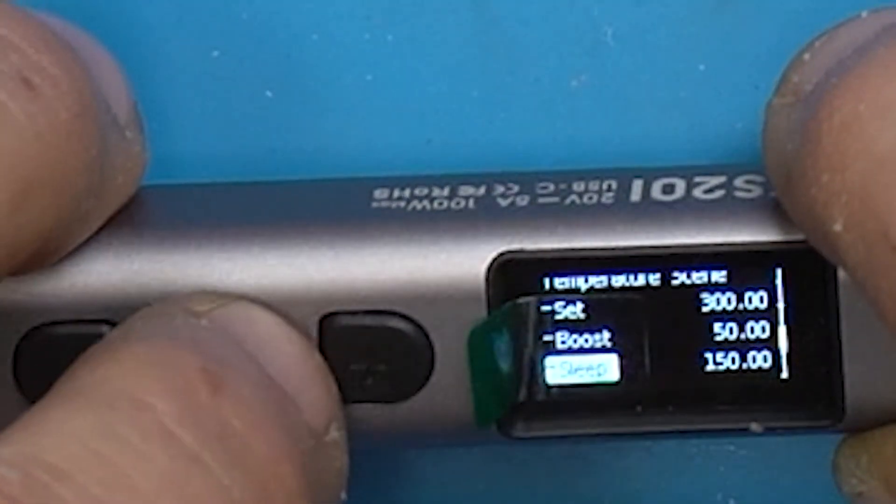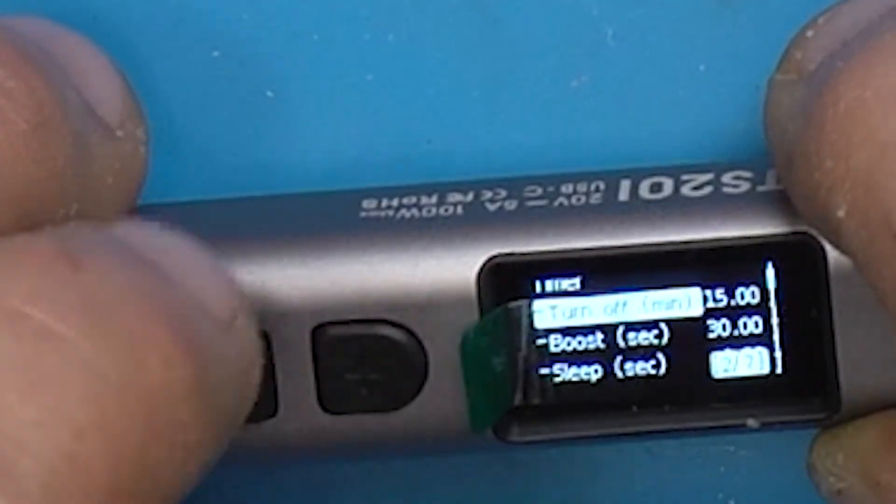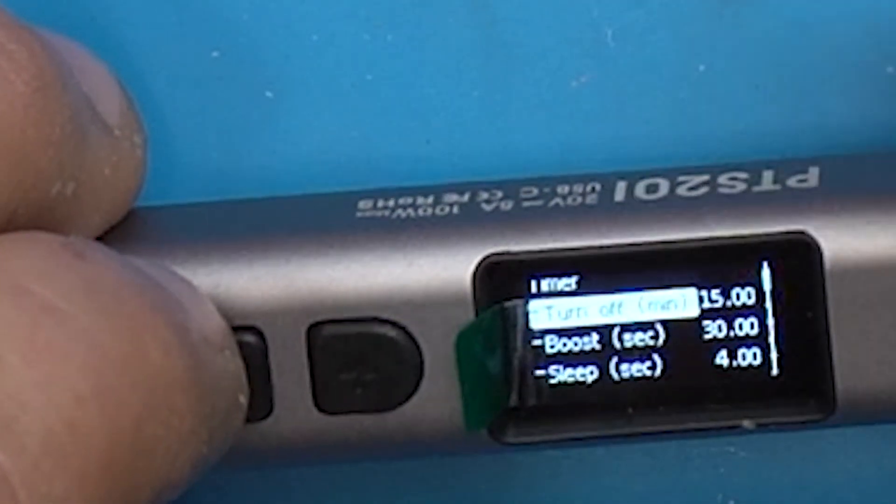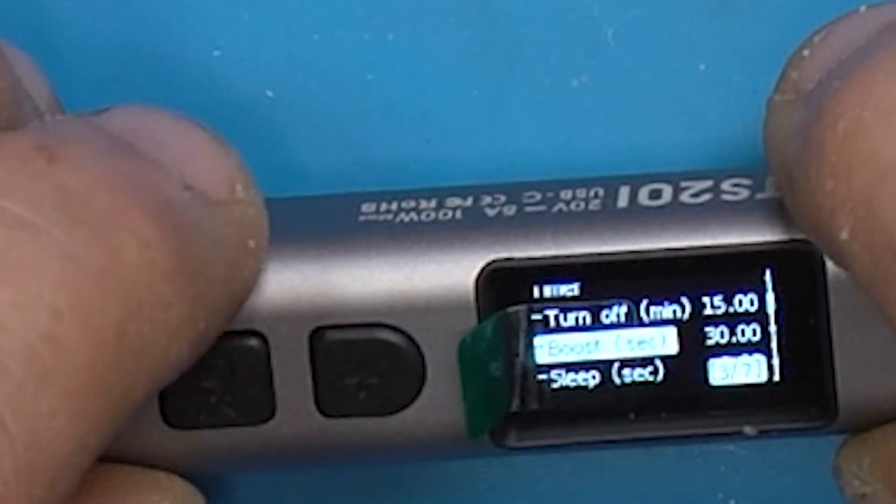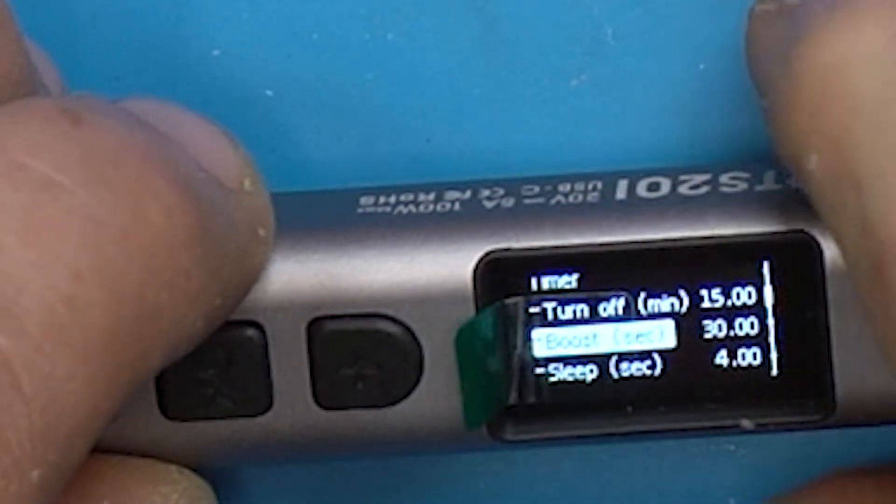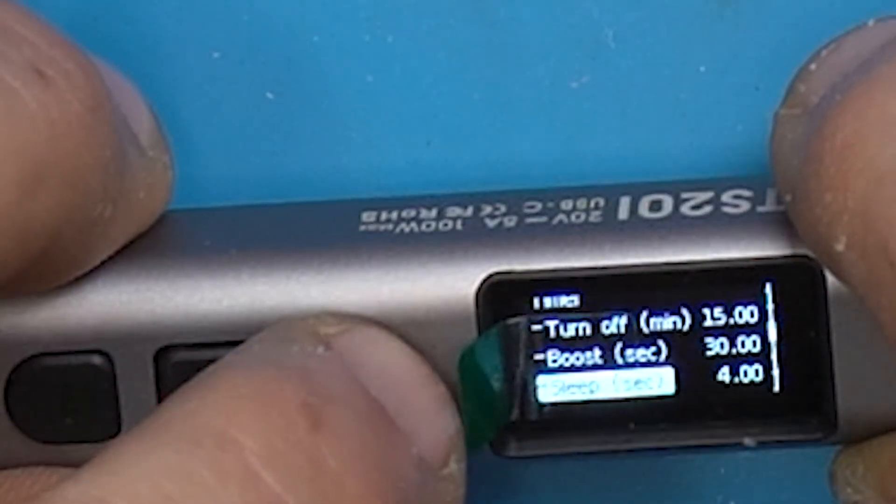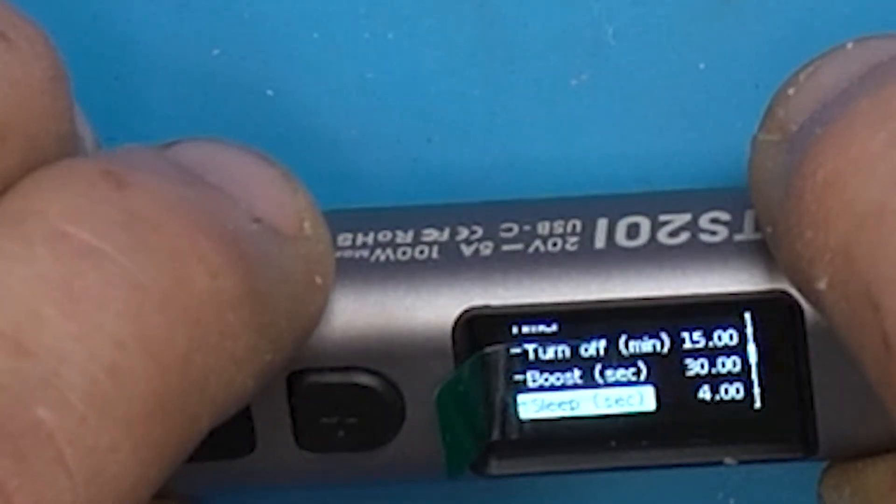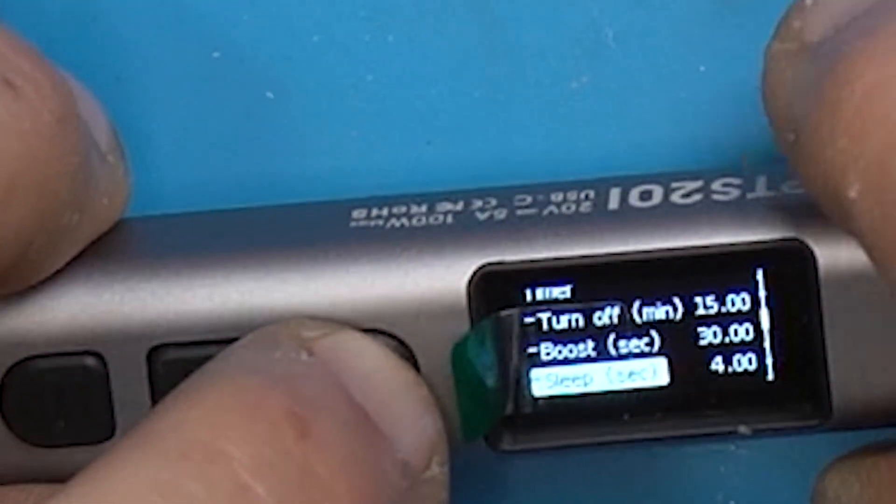At 15 minutes the iron will turn itself off and the tip will cool completely down. You can set your boost duration - right now it's 30 seconds. Sleep seconds is four, so if you leave it alone for about four seconds it will drop into sleep.